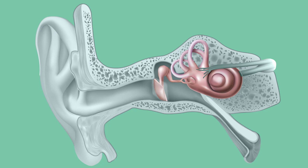Certain conditions, such as trisomy 21 or cleft palate, can lead to increased likelihood of developing otitis media. Also within the middle ear space can be found the three ossicles, which can be affected by ossicular discontinuity, whereby some disconnection of the ossicular chain has occurred, or otosclerosis, in which abnormal bone growth causes stapes fixation. Both of these conditions can affect tympanic membrane mobility, but differently.